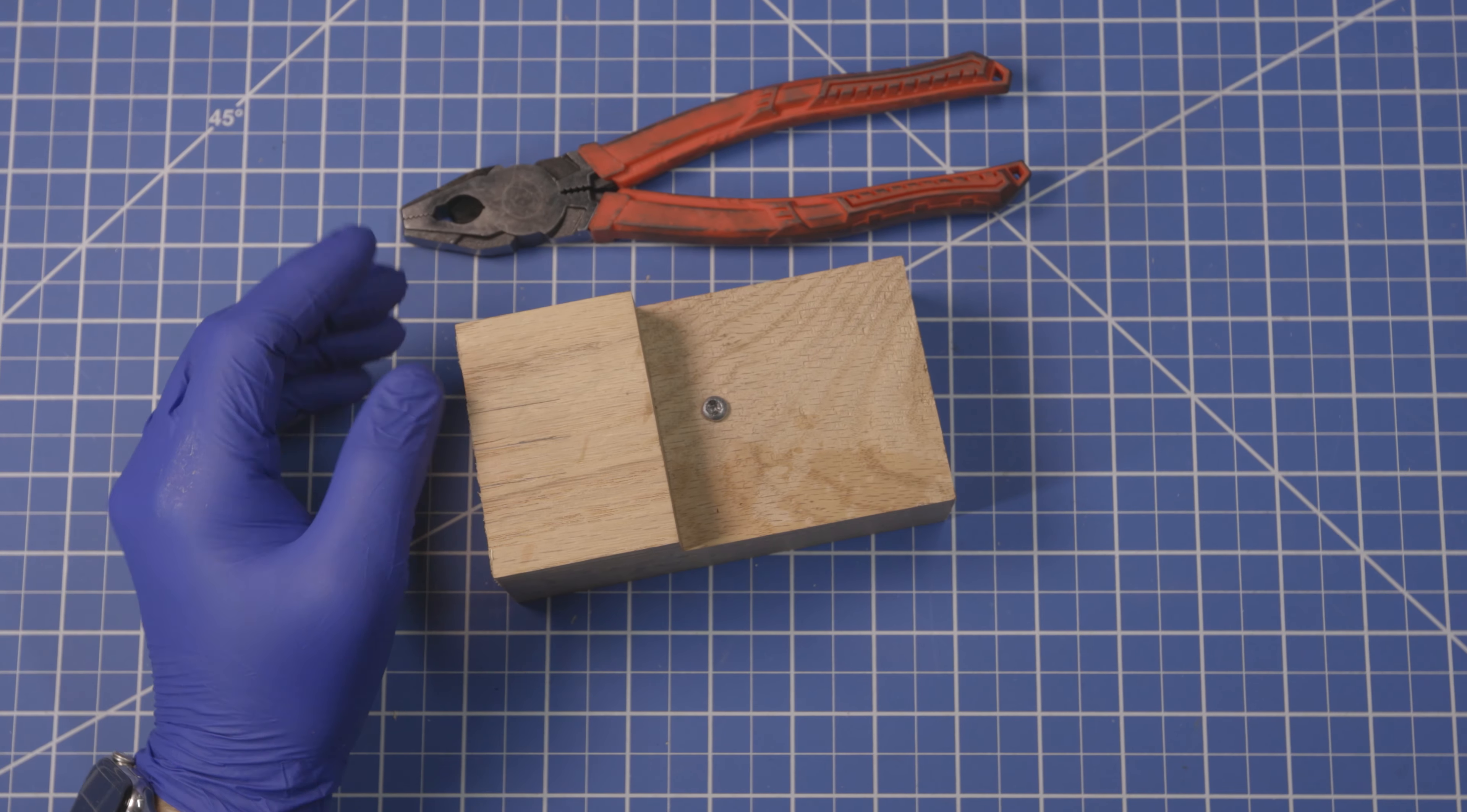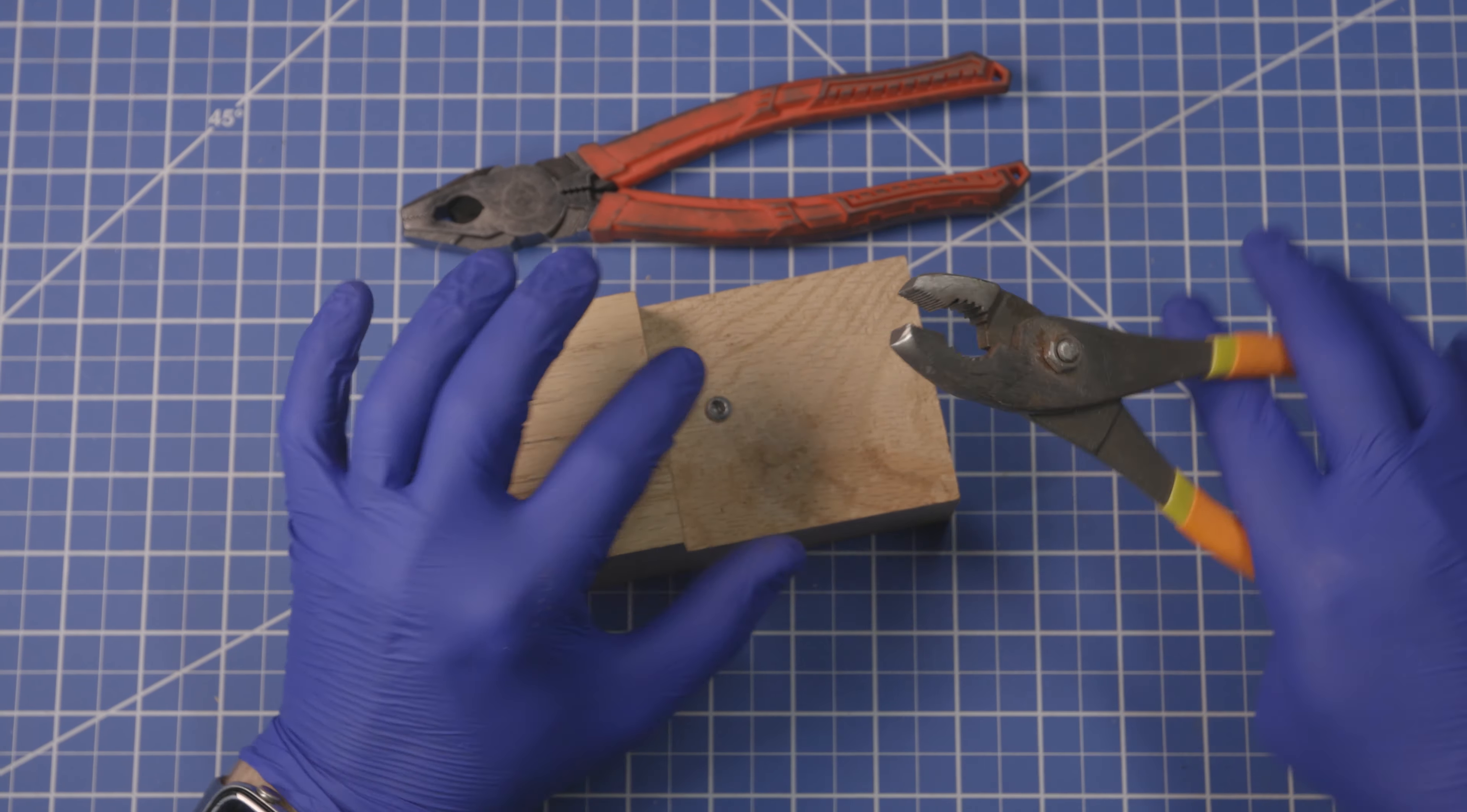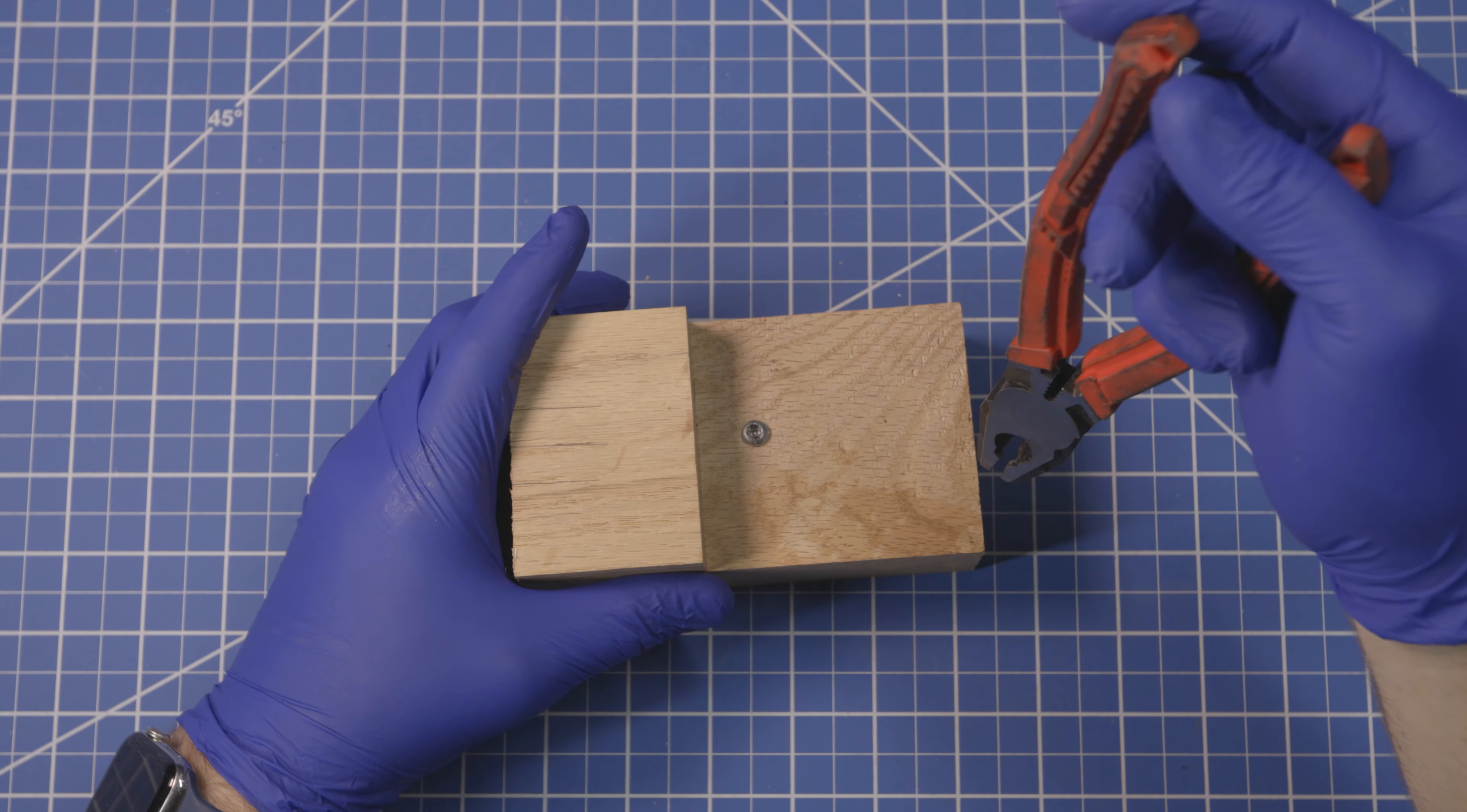But with standard pliers, like these, which have the serrations that are perpendicular to the handle, the gripping direction is this way. So you're trying to get the serrations to bite into the side of that head so that you can undo it, which is a pain in the butt. These aren't particularly great pliers, and when you're unscrewing them, you can only move the pliers so far before you're hitting an obstruction. That's why I chose this block, because it is a pain to get a screw out of it.